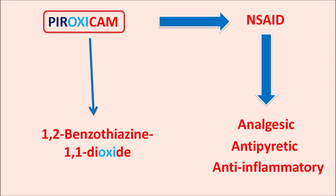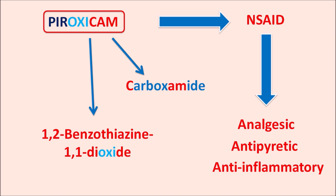This is a six-plus-six member ring system with one sulfur and nitrogen at the first and second positions. The suffix 'cam' indicates this drug is having a carboxamide moiety, and the prefix 'pyr' indicates it is having a pyridine ring system. So pyroxicam is a pyridine-substituted 1,2-benzothiazine 1,1-dioxide derivative with a carboxamide functional group.